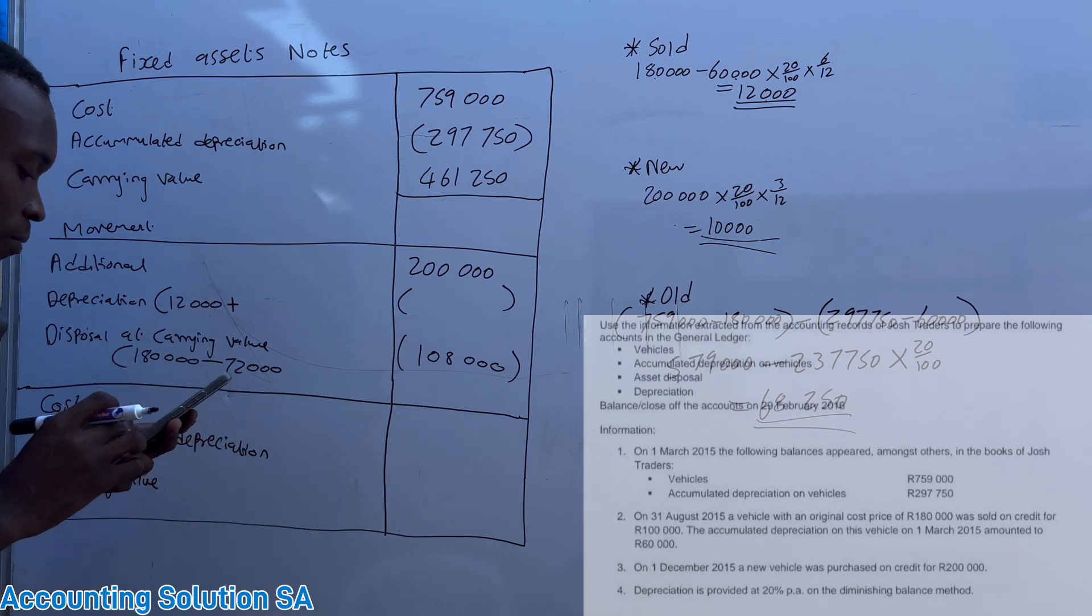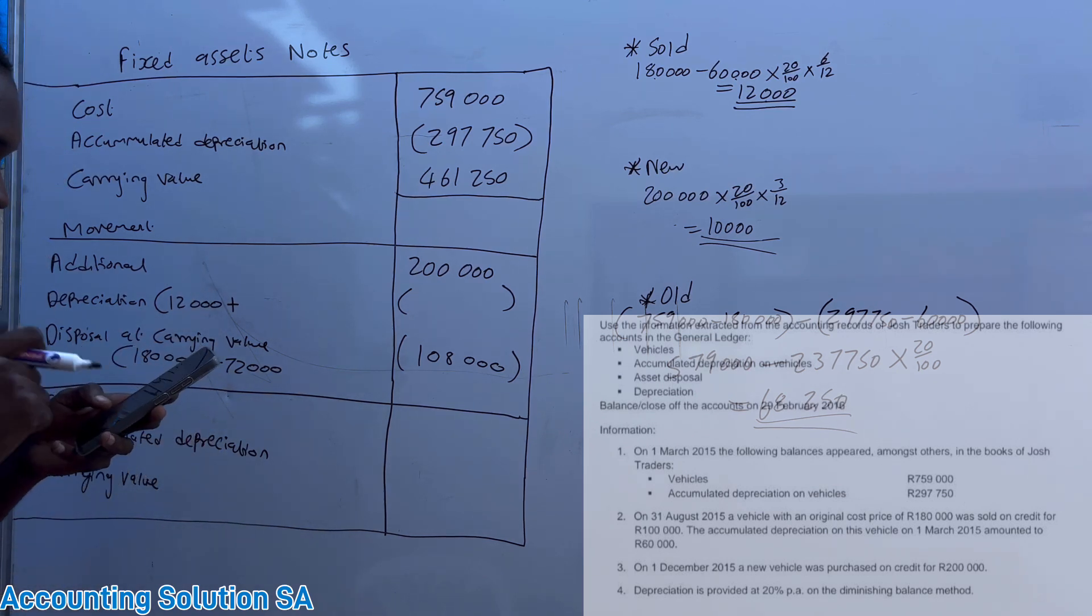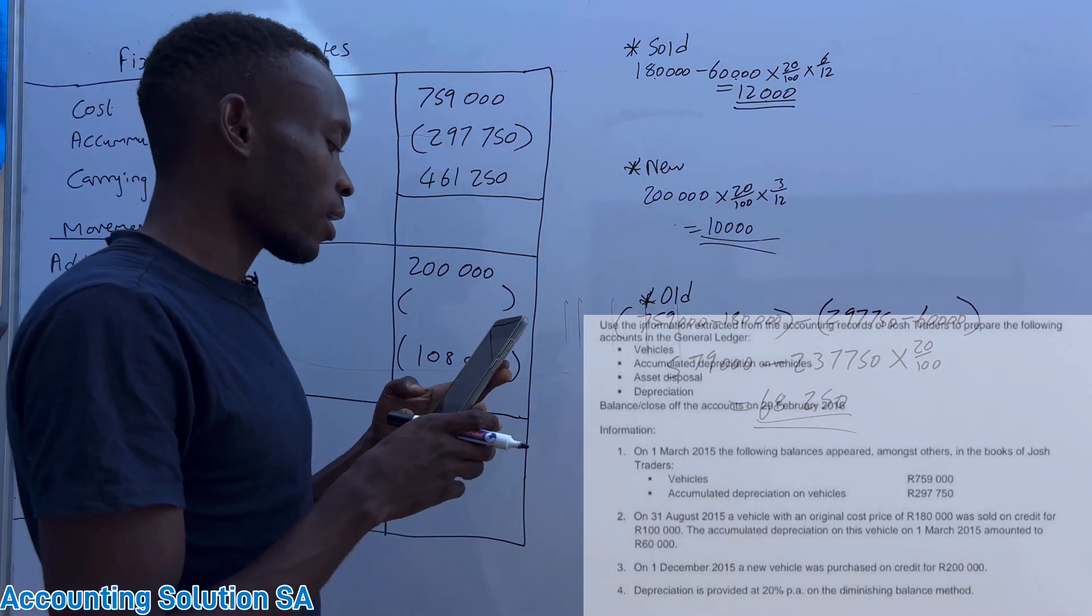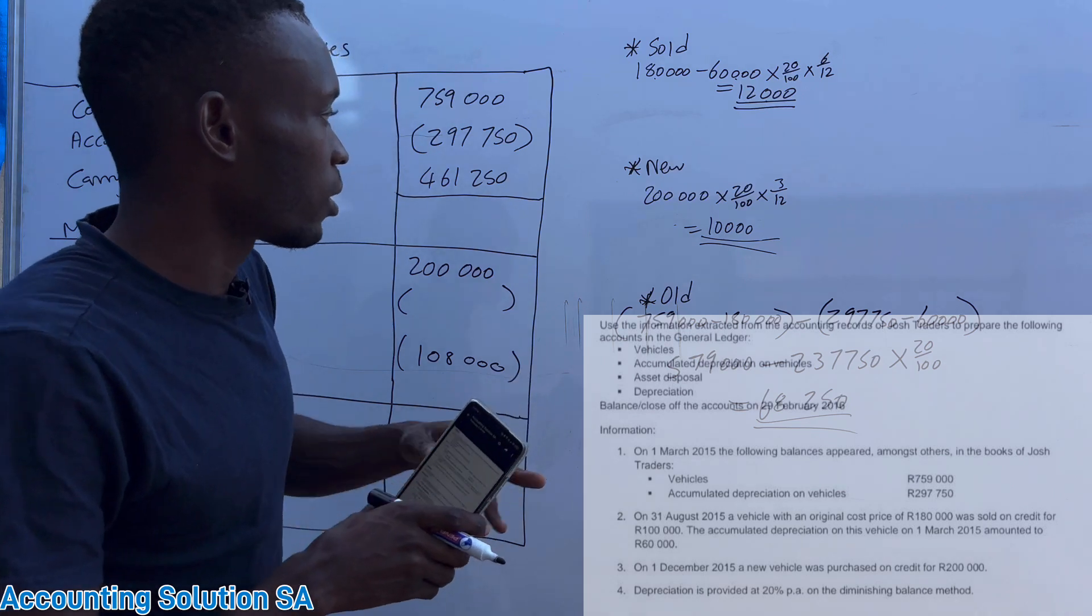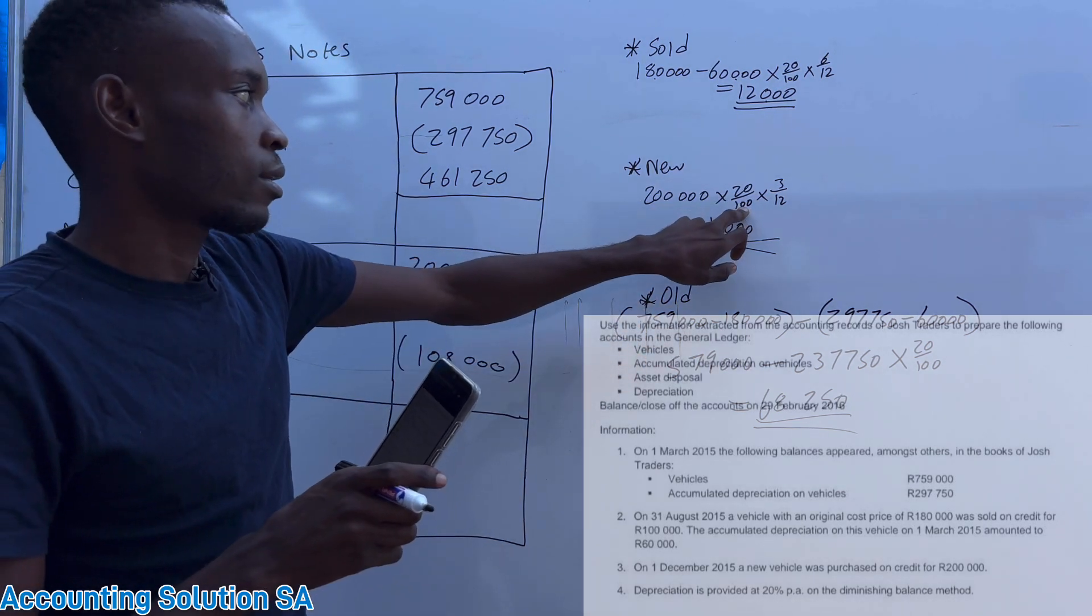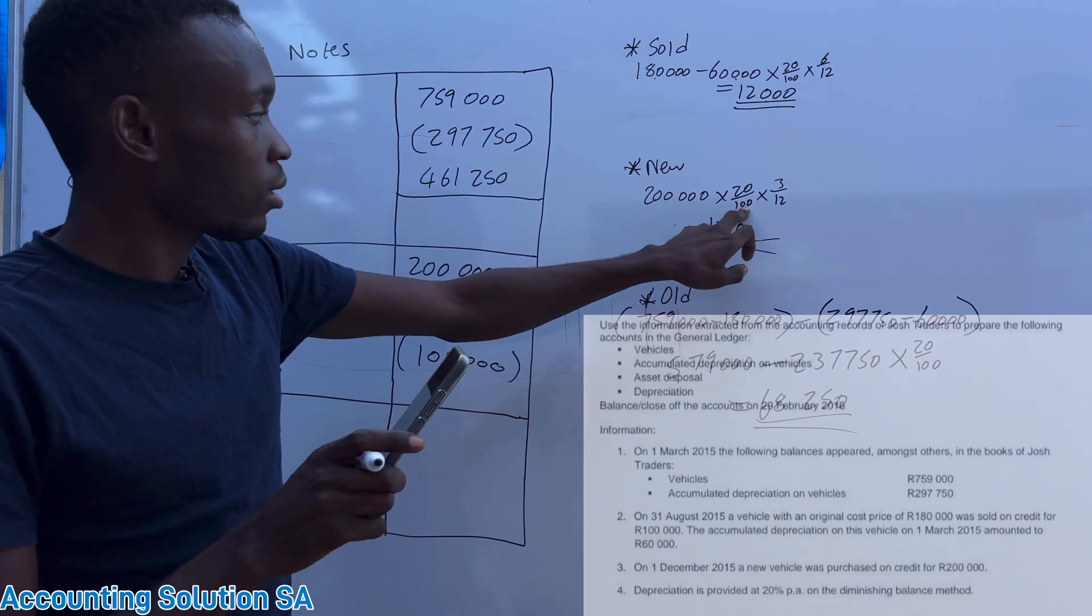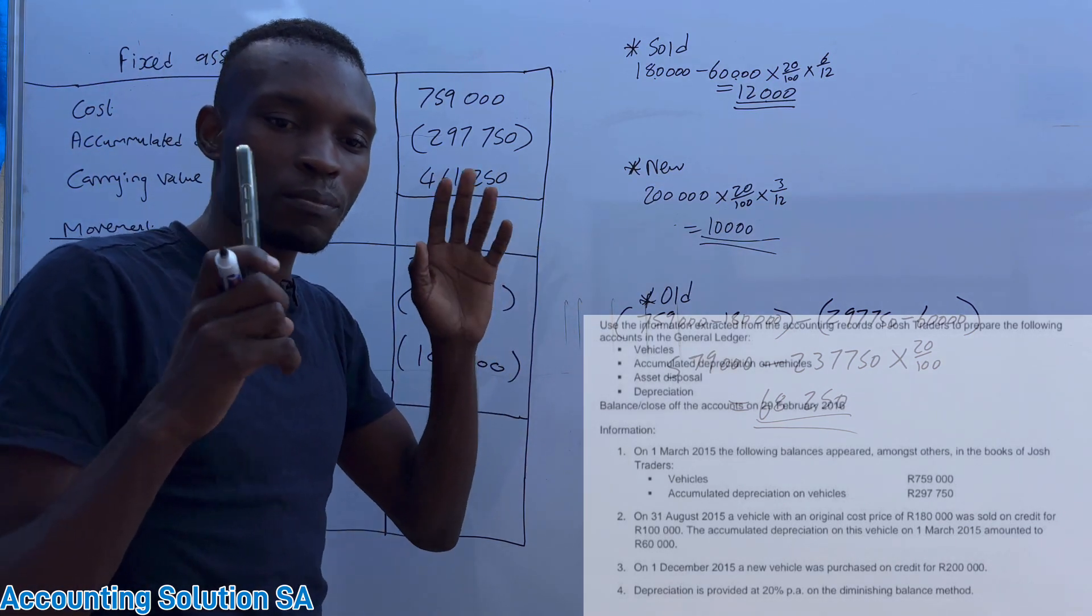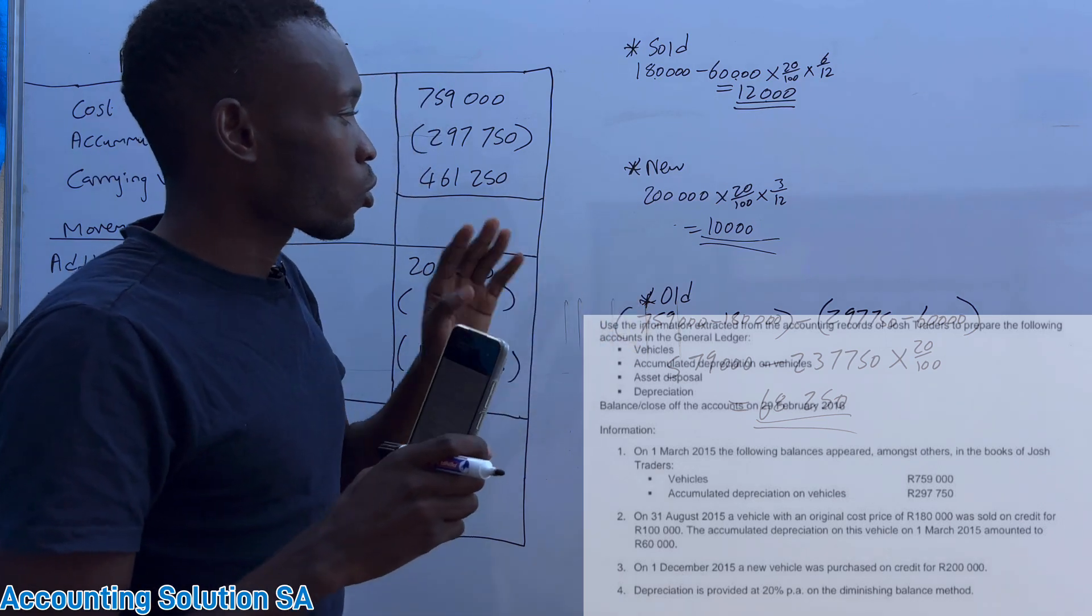60,000 is already calculated here so no need to calculate it again. 12,000 plus a new one. Remember they said on 1 December 2015 a new vehicle was purchased, which means that from new vehicle that was purchased we need to do it. We need to say 200,000 multiplied by 20 over 100.